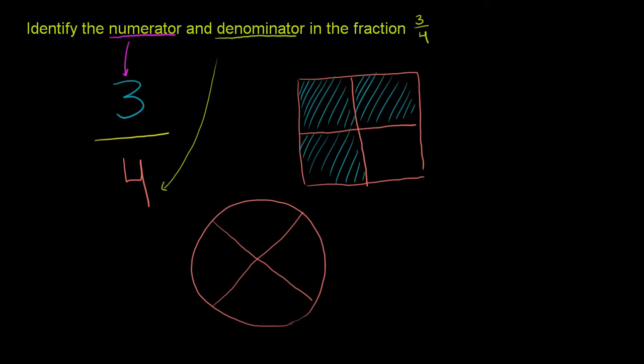They would eat this much of the pie. They would eat 3 of the 4 pieces. So this is 1 piece, this is 2 pieces, and this is 3 pieces. So you can imagine the 4, the denominator represents the total number of pieces in the pie, and then the 3 represents how many of those we ate.